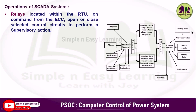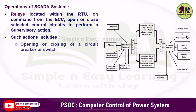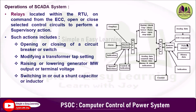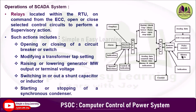The relays located within the RTU, on command received from the ECC, open or close the selected control circuit to perform a supervisory action. Such actions include opening or closing of a circuit breaker or switch, modifying the transformer tap setting, raising or lowering generator megawatt output or terminal voltage, switching in or out a shunt capacitor or inductor for voltage control, and starting or stopping of a synchronous condenser.